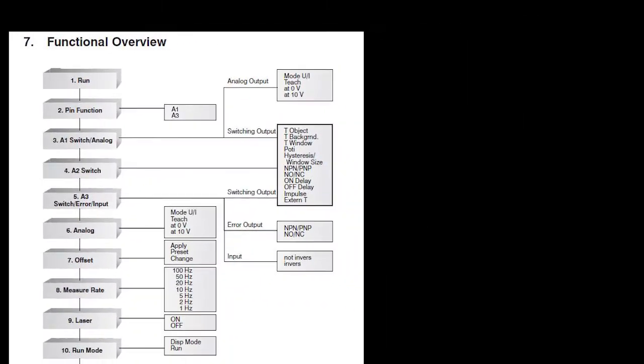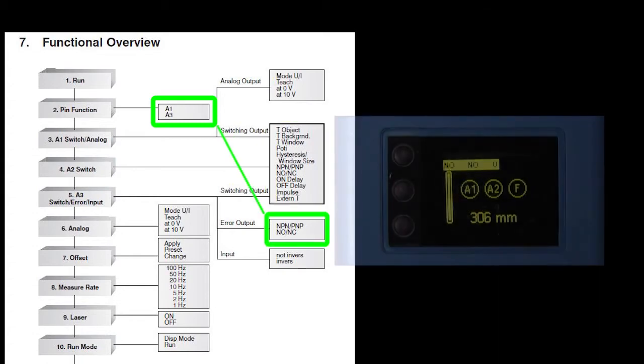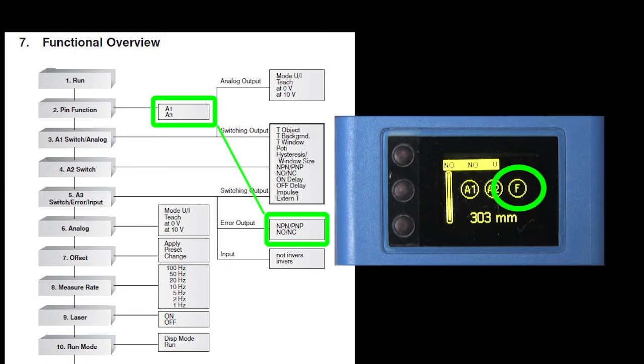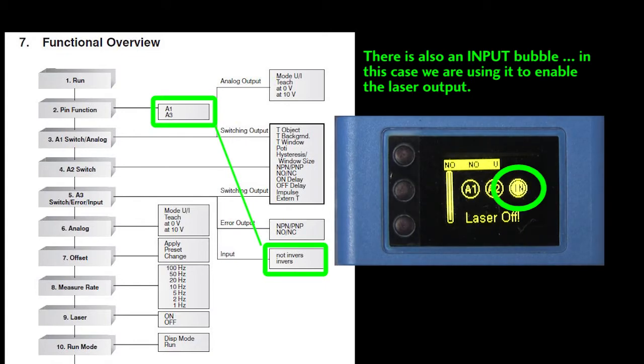One nice thing about all this is when you configure one of these pins, the bubble on the run mode screen changes to reflect that so you always know what the pin is doing. If you said you want the pin to be a switching output, the bubble would be one of these A numbers. If you said you want it to be an error output, then it becomes an F for fault. If A1 is selected to be an analog output, then you would see an AN here for analog. So at a glance you can see how your I.O. pins are set up – I really like that.